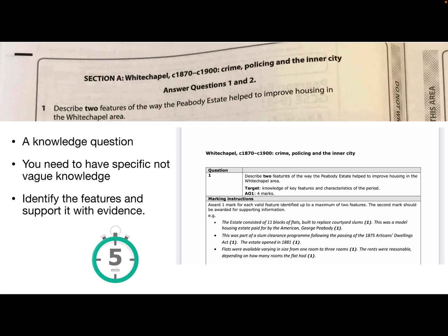We have flats are available varying in size from one room to three rooms. The rents are reasonable depending upon how many rooms the flat had and obviously that means that it's going to address that problem of overcrowding. So that can help with the way that it improves housing. You can talk about getting rid of rookeries. So like I said the list isn't exhaustive here but it has to be the specific knowledge and identify that feature first of all and then support it with your evidence. So really you should fill up the space that's given to you by the exam board.